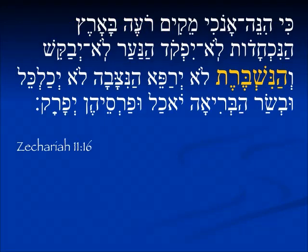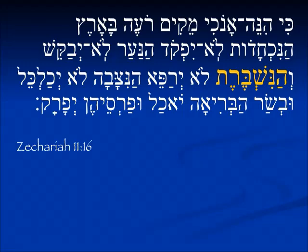In this verse we see nishbarot in the more traditional form. Here in Zechariah 11, God is talking about raising up a shepherd, but he will be an evil shepherd — he will not look for those who are cut off, he will not seek the young, and he will not heal the one who is broken.